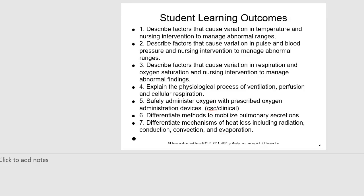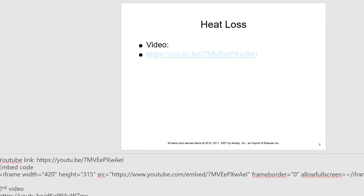Additional outcomes include: explain the physiological processes of ventilation, perfusion, and cellular respiration; safely administer oxygen with prescribed oxygen administration devices, which we did in lab and you'll do in clinical; differentiate methods to mobilize pulmonary secretions; and differentiate mechanisms of heat loss including radiation, conduction, convection, and evaporation.